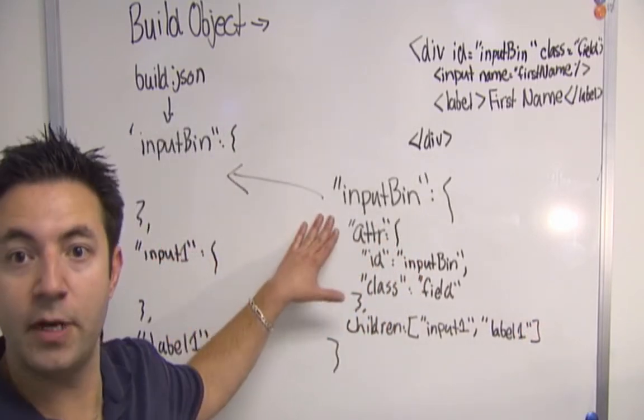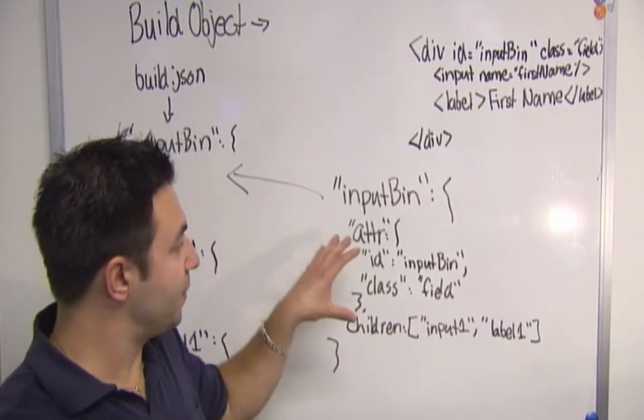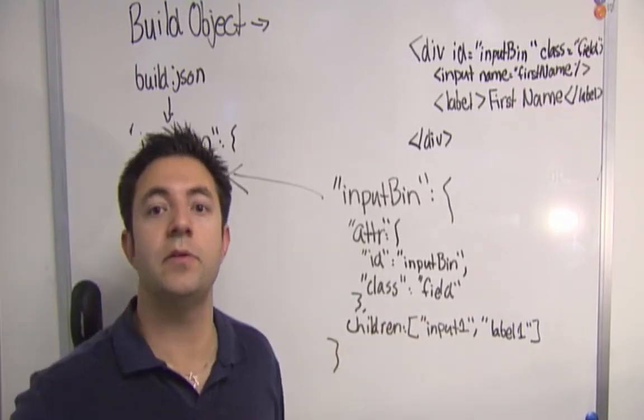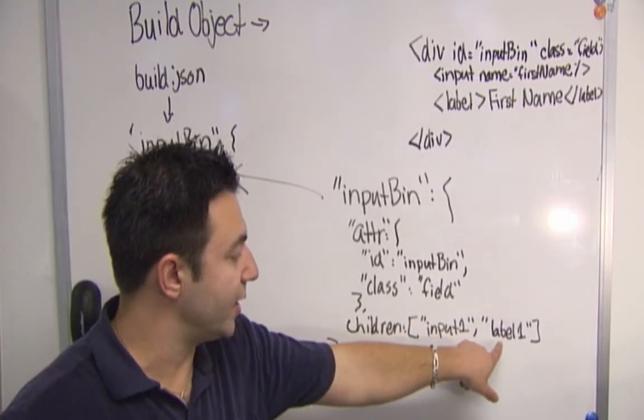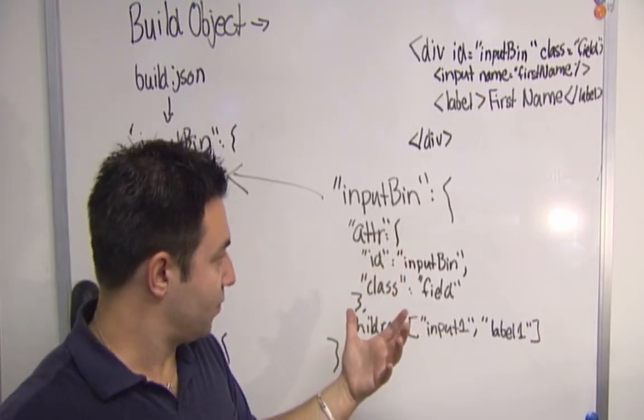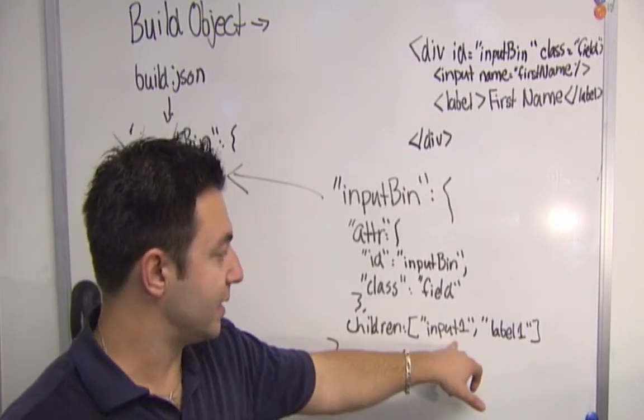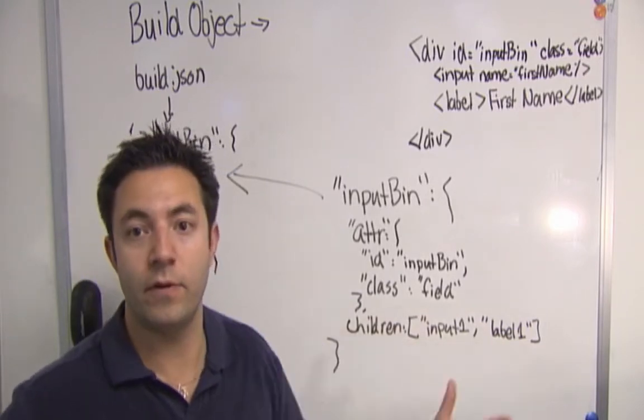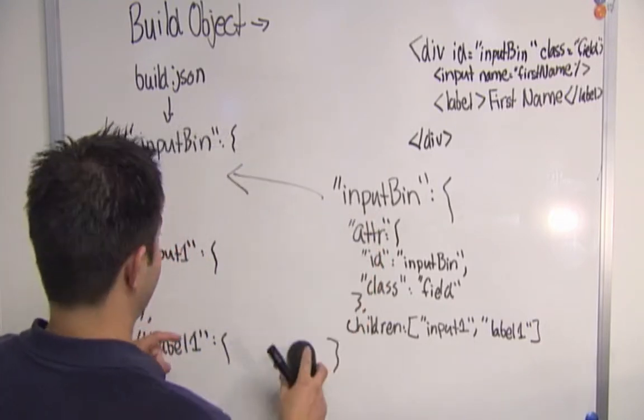That is a build object. That's a very simple build object, but it can be very powerful. This build object with these children can be reused over and over and over again. And reusing these children or wrapping these children in a different build object can be done by... We could create an input bin two that still references input one and label one if we wanted.